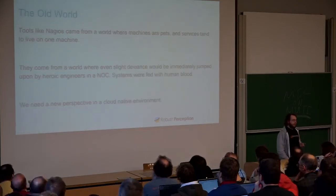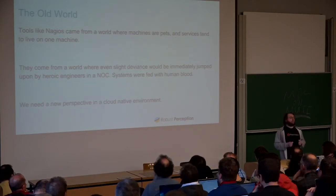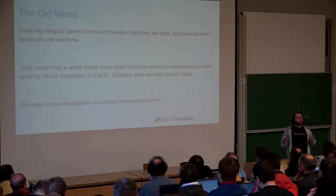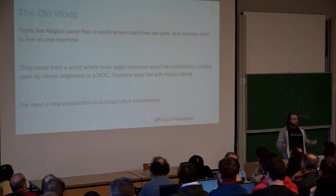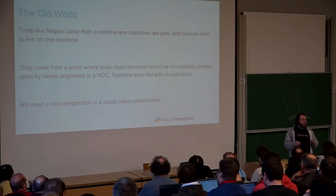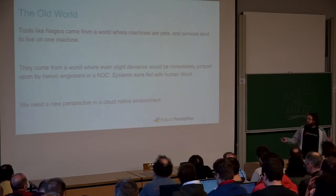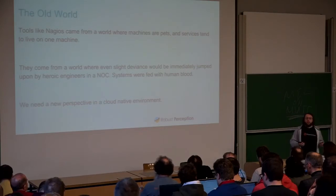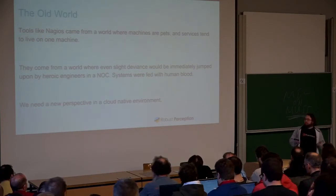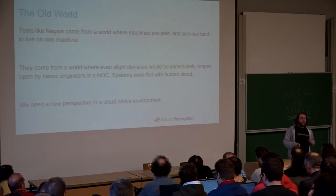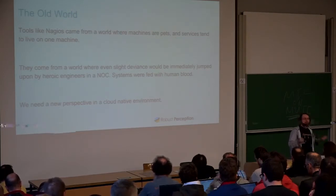Tools like Nagios existed in this world where machines are pets and services lived on one machine — we had the MySQL machine, the Apache machine, the Mail machine. One machine, one purpose. If any one of those machines deviated, humans would jump on it and fix and investigate it. But all this heroism and great attention to detail was basically also known as burnout — feeding the systems with human blood, not literally usually. Burnout's bad, we want to avoid it, and as we move into a cloud environment, we need a new perspective.